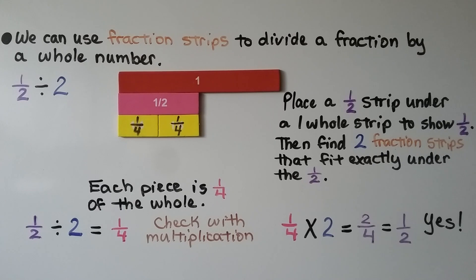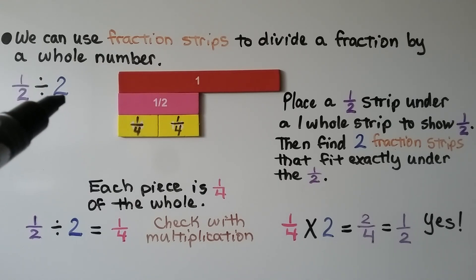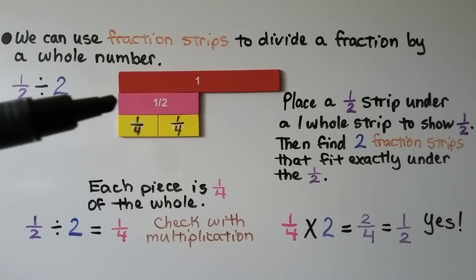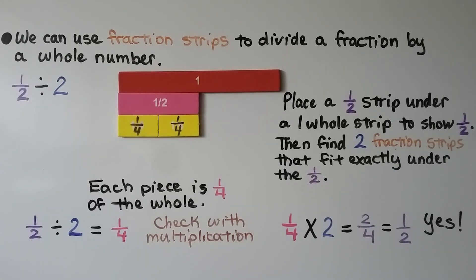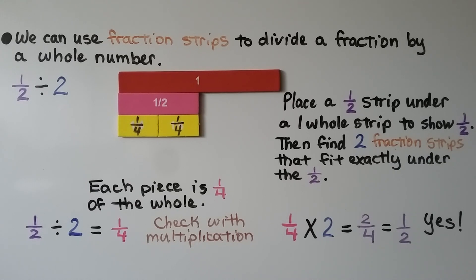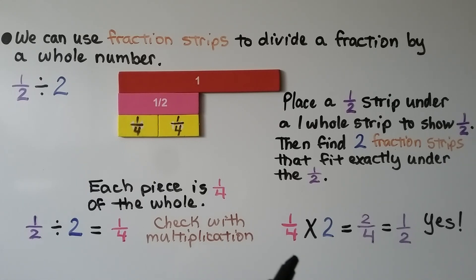We can use fraction strips to divide a fraction by a whole number. We have one-half divided by two — we're taking half of something and splitting it into two equal parts. We place a one-half strip under a one-whole strip, then find two fraction strips that fit exactly under the half. Each piece is one-fourth of the whole, so one-half divided by two is equal to one-fourth. Checking with multiplication: one-fourth times two equals two-fourths, which simplifies to one-half, so yes, it's correct.